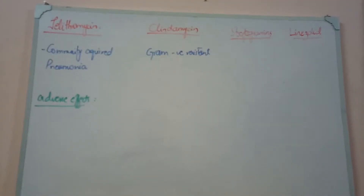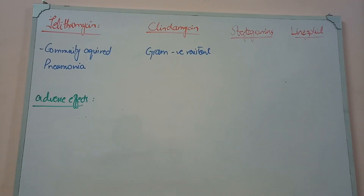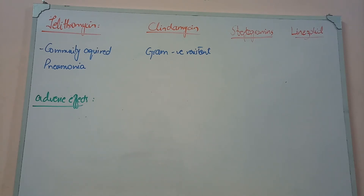Assalamu alaykum everyone. I will talk about the antibiotics which inhibit the protein synthesis of bacteria. I have studied chloramphenicol, tetracyclines, macrolides, and we have done four antibiotics: telithromycin, clindamycin, streptogramins, and linezolid. These are basically related to the same group which inhibit the protein synthesis of bacteria. The spectrum of effectivity will be different, but the mechanism of action is protein synthesis inhibition.